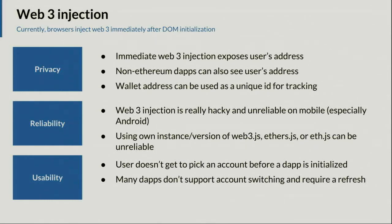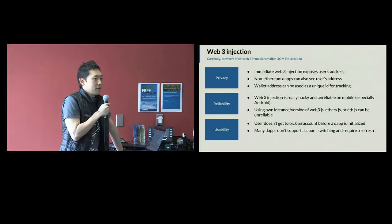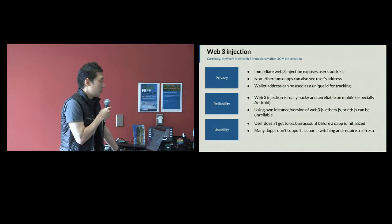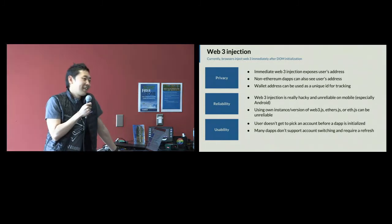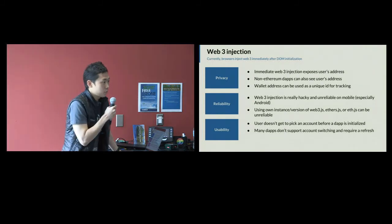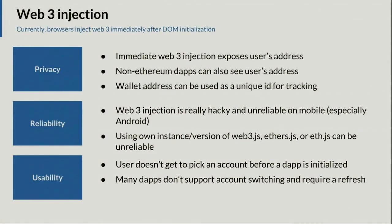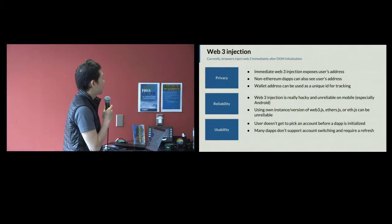Reliability: Web3 injection is really hacky, at least on Android right now. There's a WebView delegate method that allows you to intercept requests, but that callback only gets called when certain conditions are met — for example, it doesn't get called for POST requests. It's a long-standing Android bug. And if the page is rendered by a service worker or cached there, again that method doesn't get called. So we end up having to disable the service worker, inject Web3, and reload the page with the content — a lot of crazy hacks.